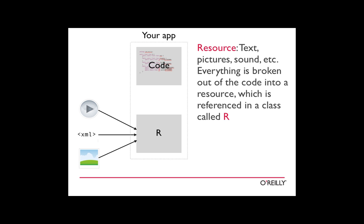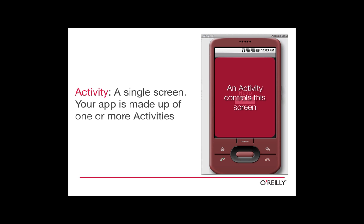Another important concept is the activity. An activity is basically a controller in a model-view-controller pattern, which is the fundamental pattern used in GUI programming. The model models whatever system you're trying to build; the view is what gets shown to the user; the controller controls interactions between those two — it gets data from the model, puts it on the view, takes input from the view, and makes the whole app run. An activity can basically be thought of as controlling one screen's worth of data. When you see a screen, you're probably seeing one activity.